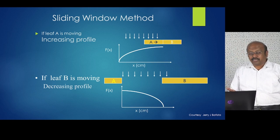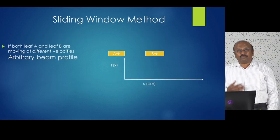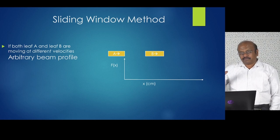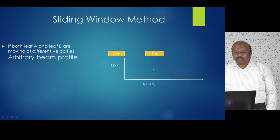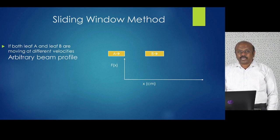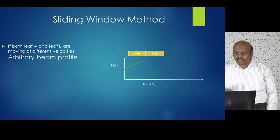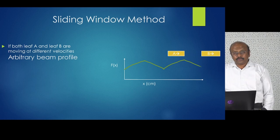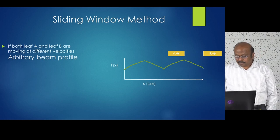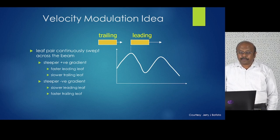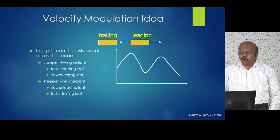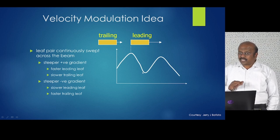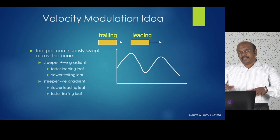The steepness of the profile can be changed by changing the velocity of the leaf. For an arbitrary profile with valleys and hills, you use two leaves: a leading leaf and a trailing leaf. The trailing leaf moves to produce an increasing profile, and the leading leaf moves to produce a decreasing profile. You can make any arbitrary profile: for a steeper positive gradient, use a faster leading leaf and slower trailing leaf; for a steep negative gradient, use a slower leading leaf and faster trailing leaf.